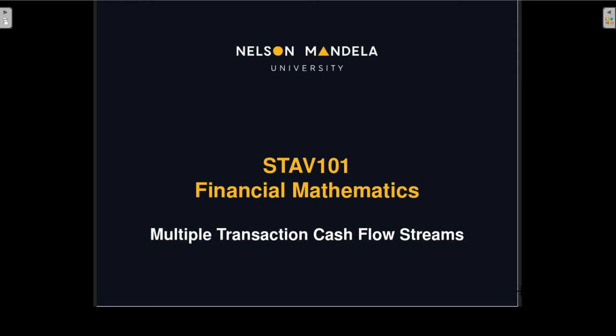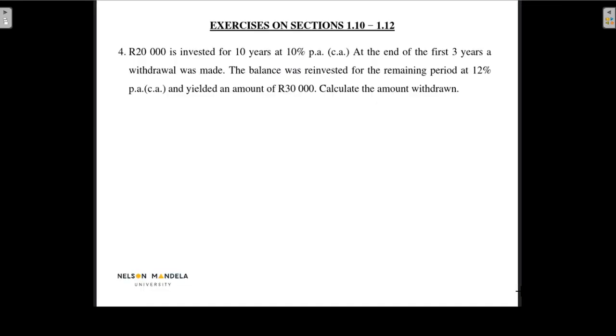Up to now we've been working with single cash flows where we have a single present value that we move through time. But before we continue with multiple transaction cash flows, we will do a little bit of revision on the previous lecture — the changes in interest rate. If you go to the exercises at the back of chapter 1, for exercises on section 1.10 to 1.12, you should be able to do numbers 1 to 4 after the previous lecture. We will start by just looking at number 4.